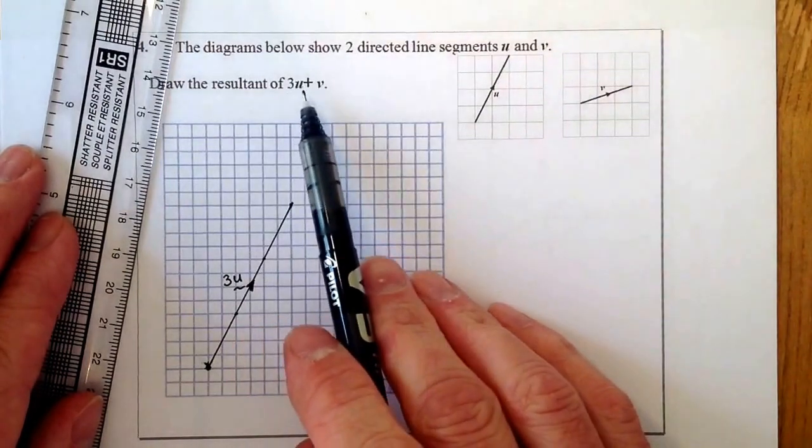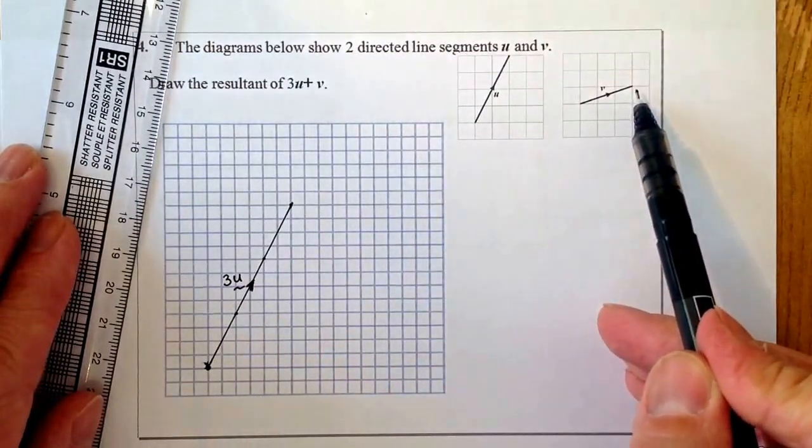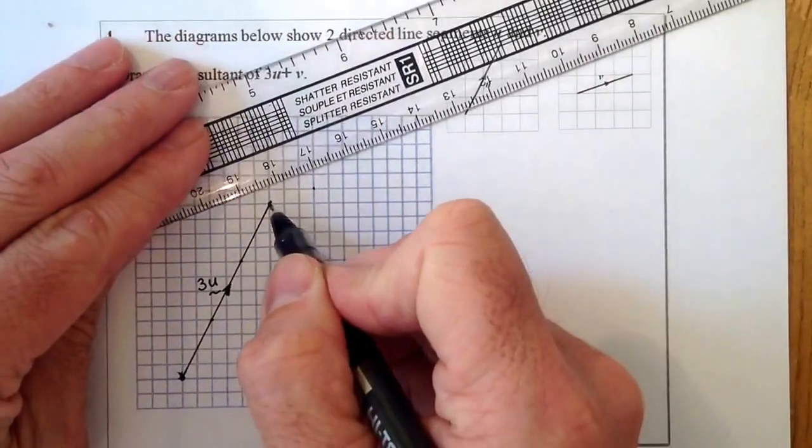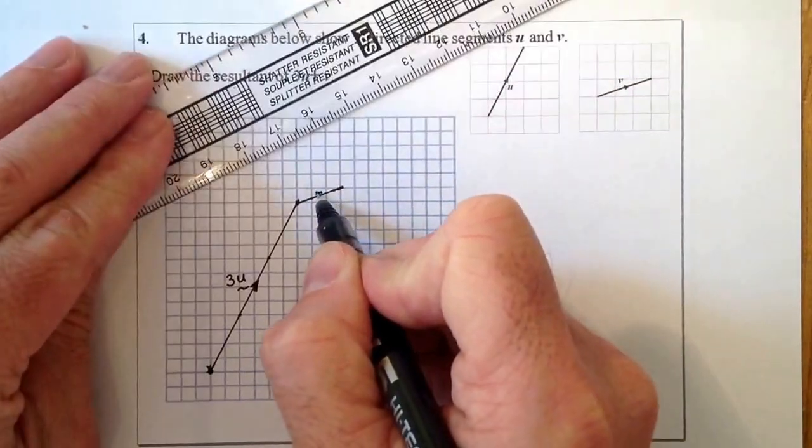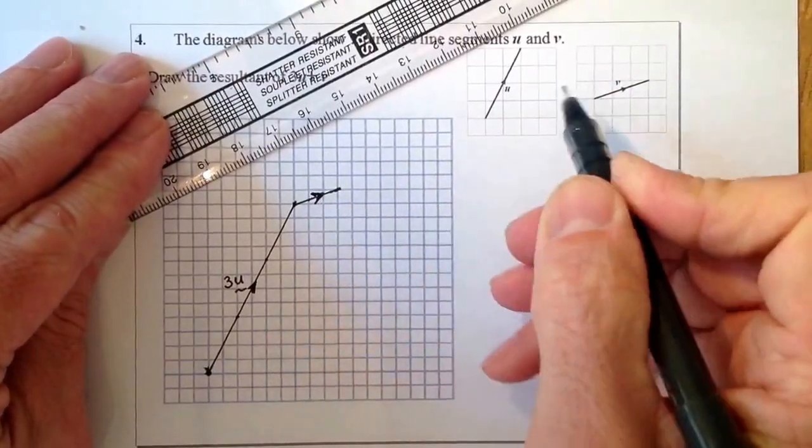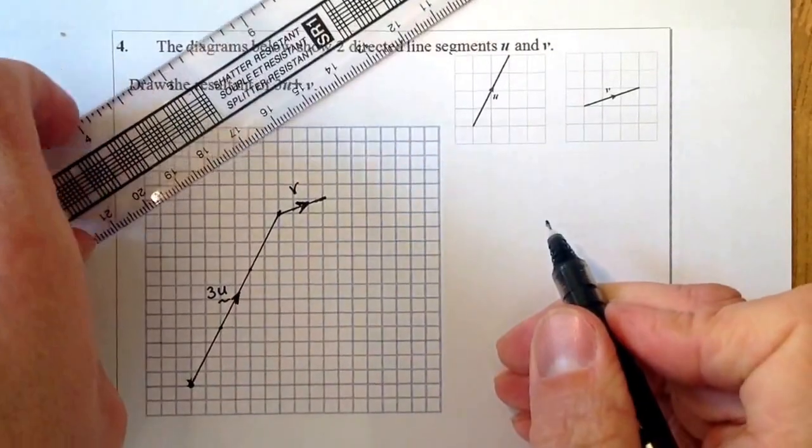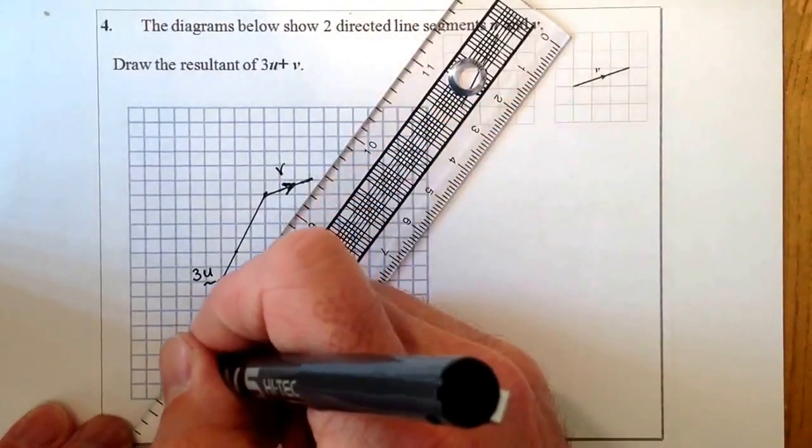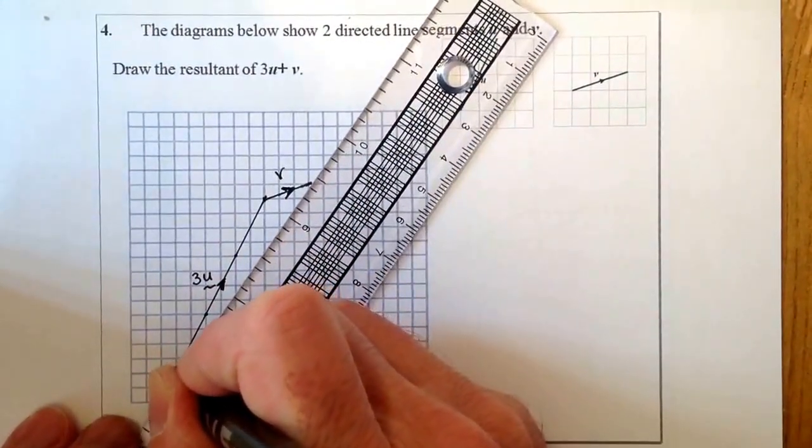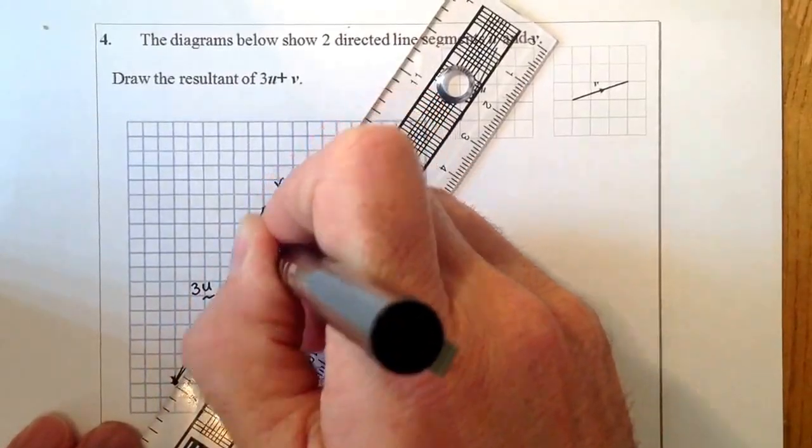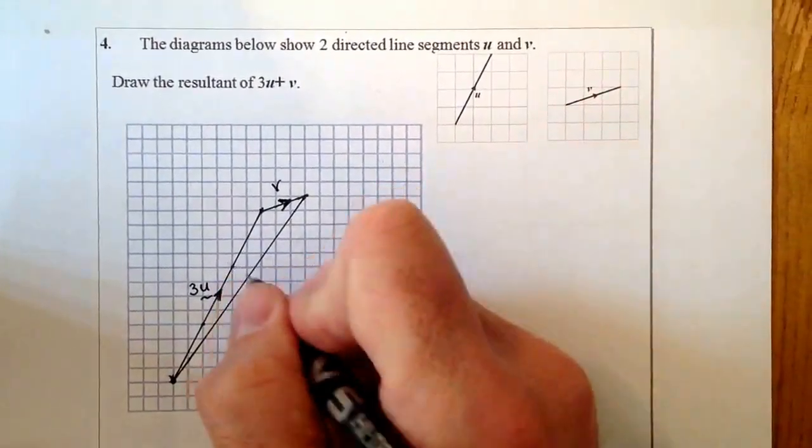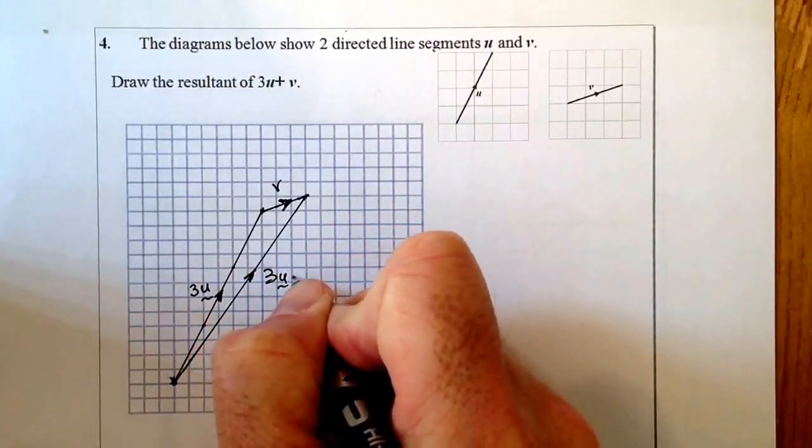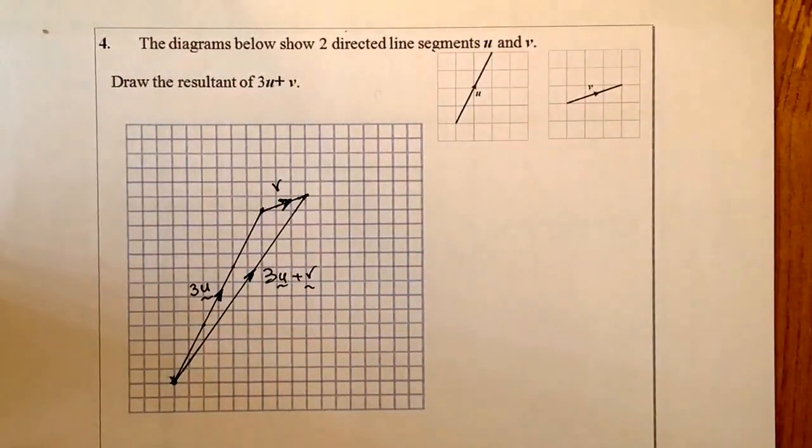What I've got is the resultant of 3u plus v. So v is three along and one up. So I'm just going to draw one of these. And that's going to go to there. So three along and one up. So that's there. That direction there. So make sure your arrow appears in. And that's going to be just v that's there. The next thing I'm going to do is I'm going to draw the resultant from here down at the bottom from the tail of 3u all the way up to the head of v. So the resultant is going in that direction there. And that there will be 3u plus v as the resultant. That's the question complete.